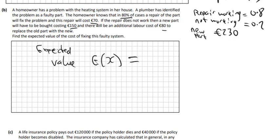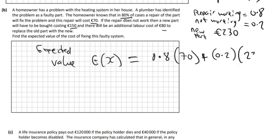The expected value will be: the probability that the repair works — 0.8 — multiplied by the cost of the repair, which is 70. And then we add on the probability that it will not work — 0.2 — multiplied by the cost if it doesn't work, which is 230. So you're just multiplying those things together and adding them. When you put that in the calculator you should get 102 euro. So that's the expected value.